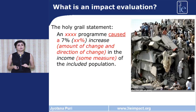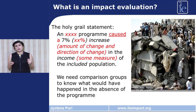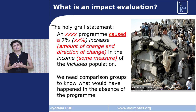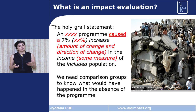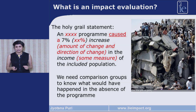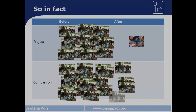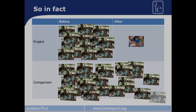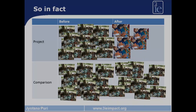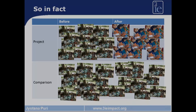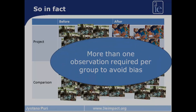Doing an impact evaluation usually requires the use of comparison groups. If you want to hear more about impact evaluations and comparison groups, please refer back to our lectures in the first part of this series. The important part about comparison groups is that you require both comparison groups and project groups. You also require a lot of sample points or data points in each of these two groups — more than one observation — so that you can reduce bias in your estimates.